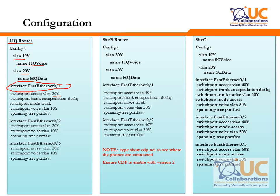Use 'switchport voice vlan 102' and 'switchport access vlan 202'. You don't have to trunk the phone ports — it won't affect you either way. However, the router port must be trunked because the router carries both data and voice VLANs. For phone ports two and three where IP phones are connected, simply define the access VLAN, voice VLAN command, and portfast. Do the same for port three.